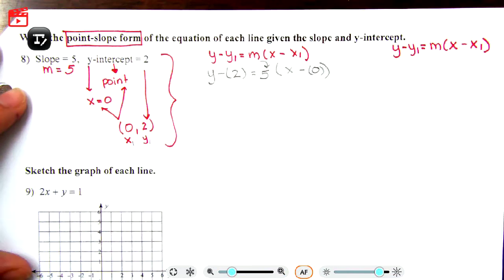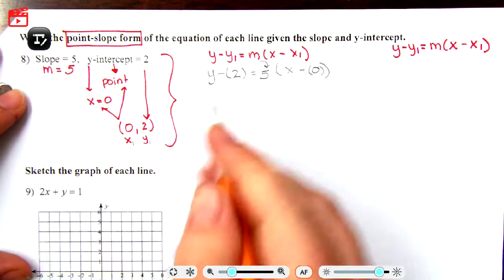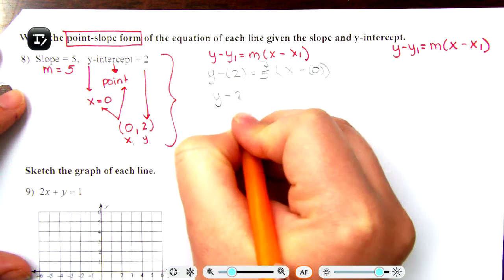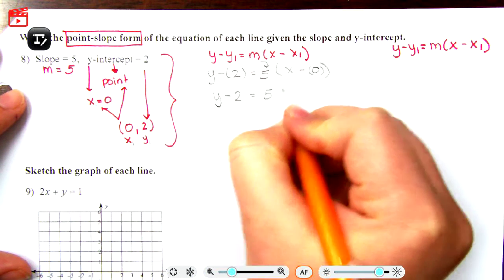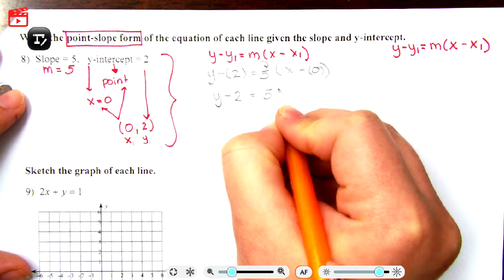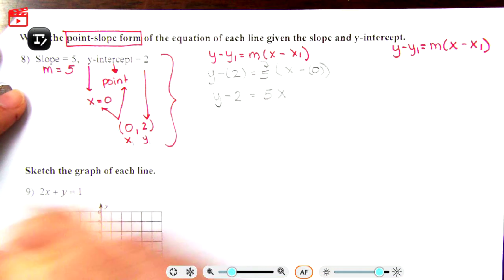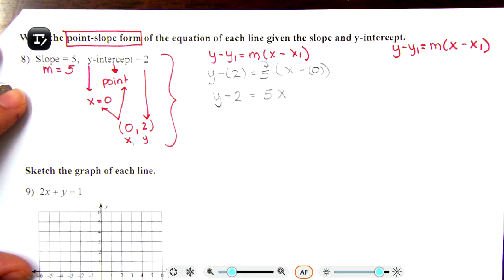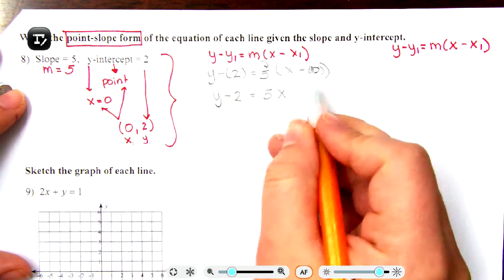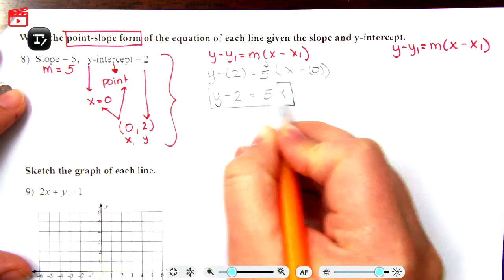So here I have y minus two is equal to five x. Take away nothing is just x. You may choose to leave that in parentheses. X take away nothing is just x, so this is our final form.